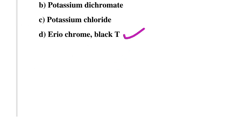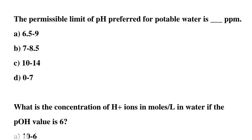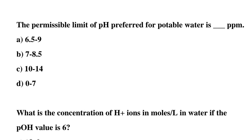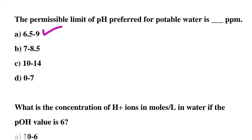Next question: the permissible limit of pH preferred for potable water is — option A: 6.5 to 9, option B: 7 to 8.5, option C: 10 to 14, option D: 0 to 7. The correct answer is option A: 6.5 to 9.